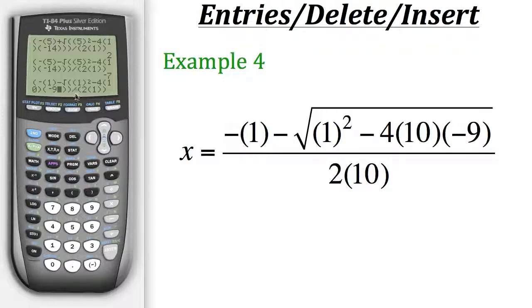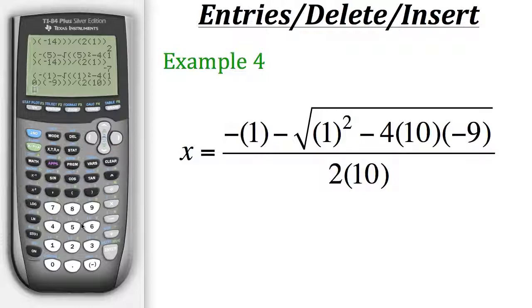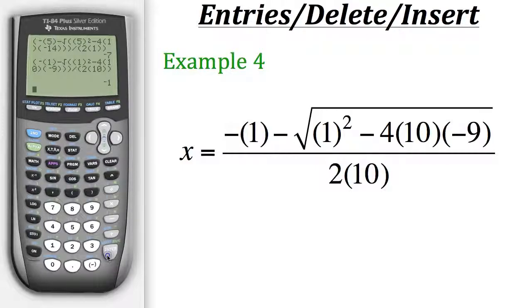And now you'll notice that the rest of our entry moved to the left. And now the last change we need is to change this 1 into a 10, like we have down here. So we'll go to the spot right after the 1 and insert a zero. Now everything has been changed appropriately, and we could hit enter to get our new result, that being x equals negative 1.